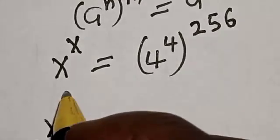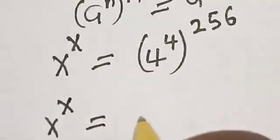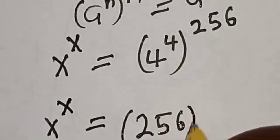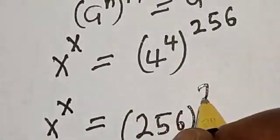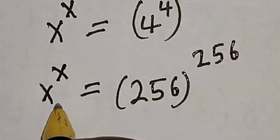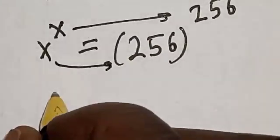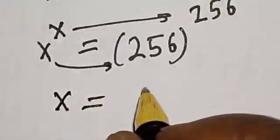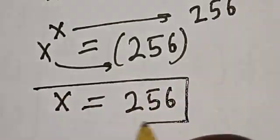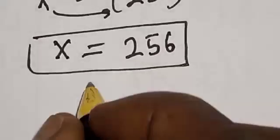Now s raised to the power s is equal to 4 raised to the power 256, raised to the power 256. By comparing both sides — this equals this, and this equals this — therefore s is equal to 256. That is our final answer. Let's check to confirm if our answer is right.